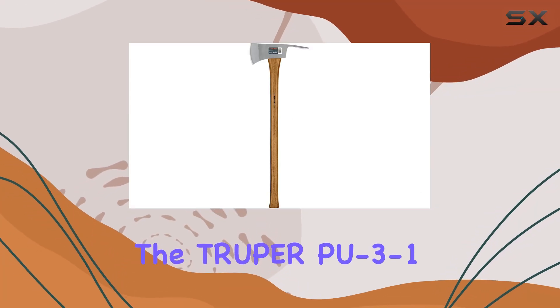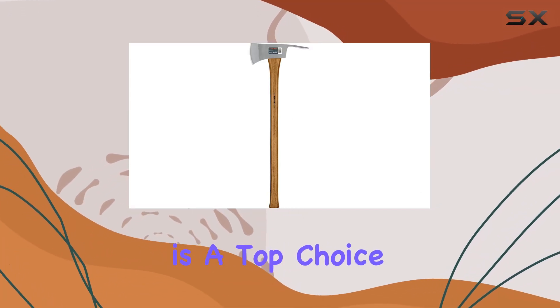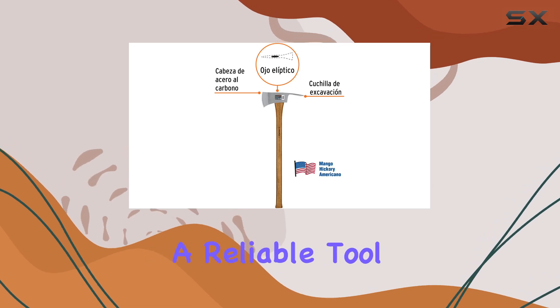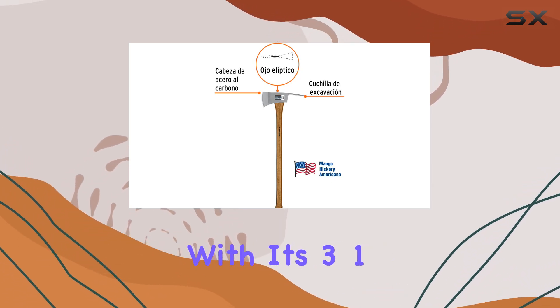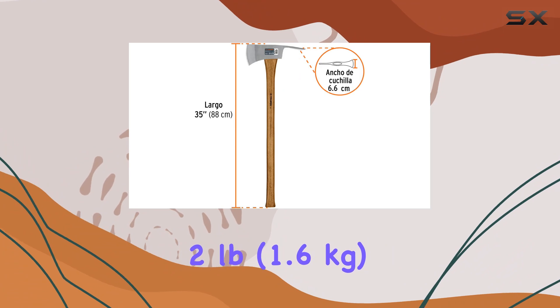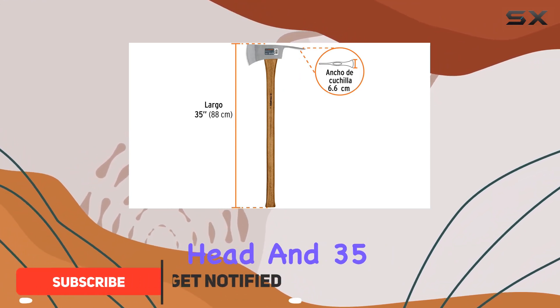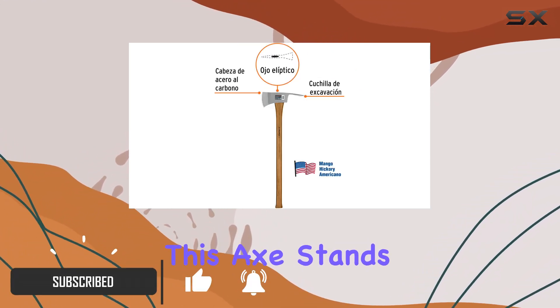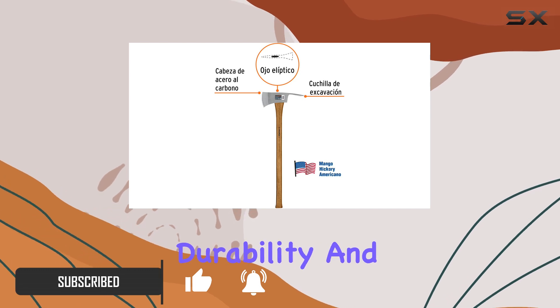The Truper PU 3-1/2M Pulaski Axe is a top choice for anyone needing a reliable tool for tough tasks. With its 3-1/2 pounds (1.6 kilograms) carbon steel head and 35-inch hickory handle, this axe stands out for its durability and performance.